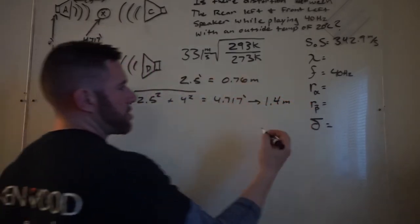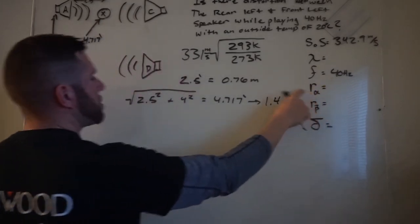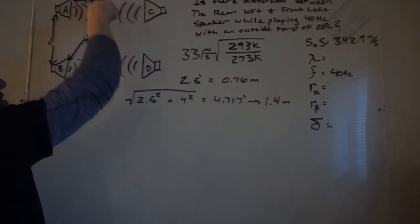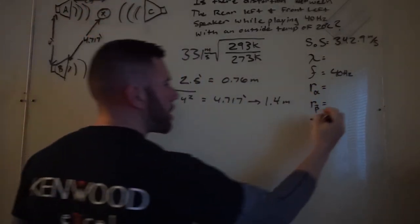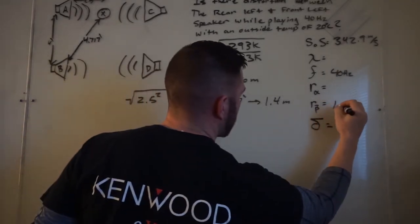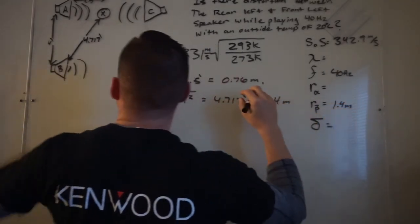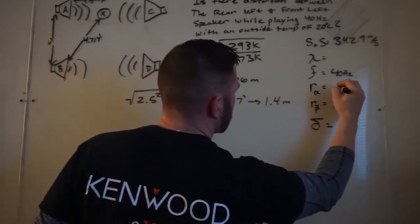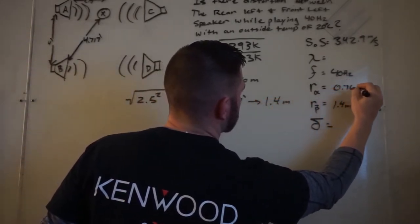So now that we got those two radiuses, which is how far the distance from that center point is, so from B, the back left, we have 1.4 meters, and from A, the front left, is 0.76 meters.